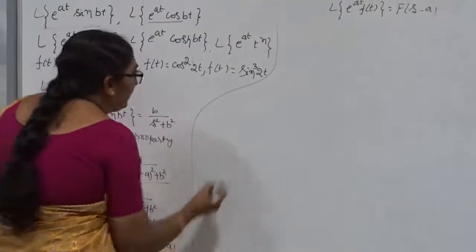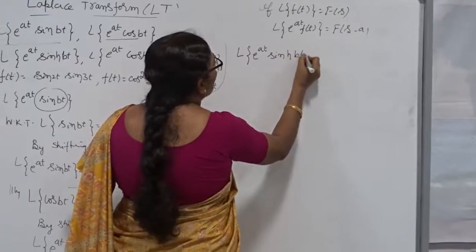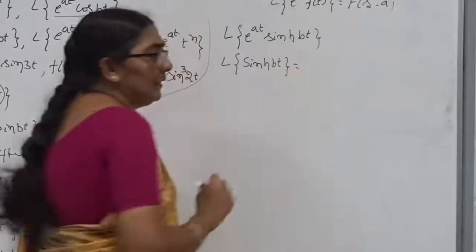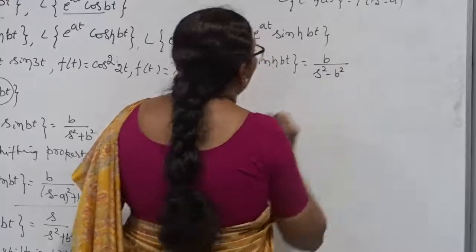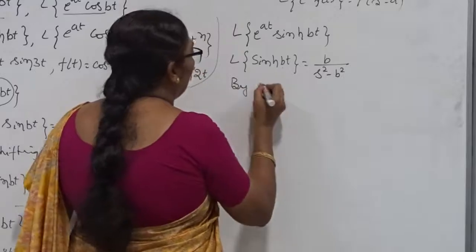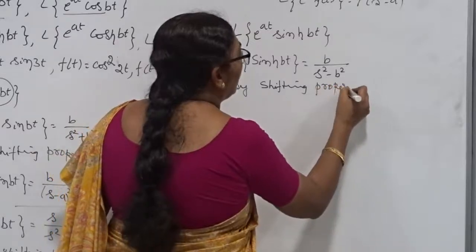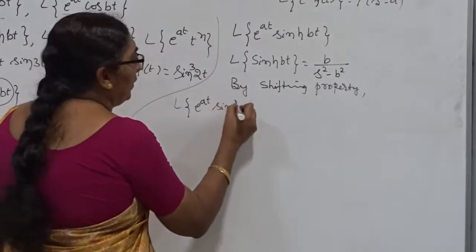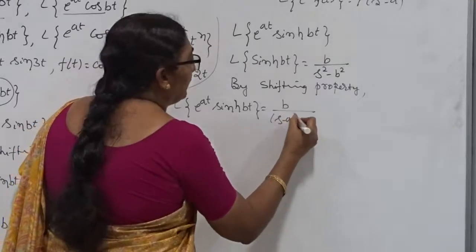Similarly, I want to find out the Laplace Transform of e to the power At into sinh Bt. First, you have to write what is the Laplace Transform of sinh Bt. We discussed in the previous class — that is treated as a standard function — and the value is B divided by s squared minus B squared. Now, by the Shifting Property, the Laplace Transform of e to the power At into sinh Bt is B divided by (s minus A) squared minus B squared.